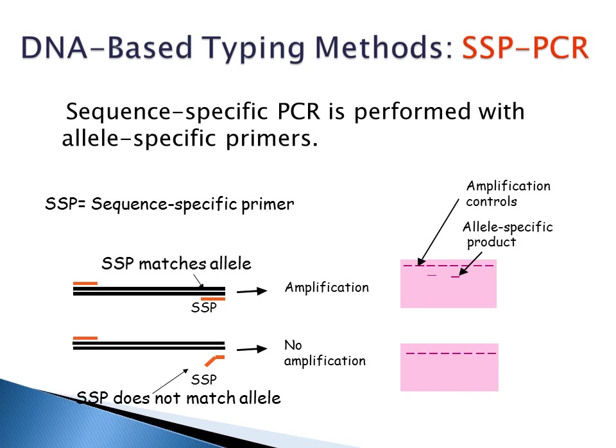You can also do sequence-specific PCR where you take a sequence-specific primer that matches your allele and also a primer that does not match the allele. If you get amplification, that means you have allele-specific product. If you do not get amplification, it means that you did not have that allele sequence.